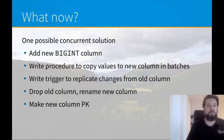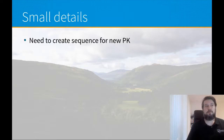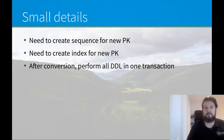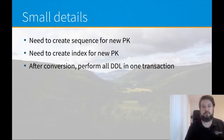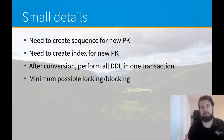Let's look at a few details on what exactly needs to take place here. One detail is that we need to create a sequence for the new primary key. We also need to create the new primary key index. After the conversion, we had best perform all of the DDL — the column dropping and renaming — in one transaction in order to be safe. Keeping it in one transaction, Postgres tries to execute it as fast as possible, so we will encounter the minimum possible locking and blocking of other operations by other users of our database.